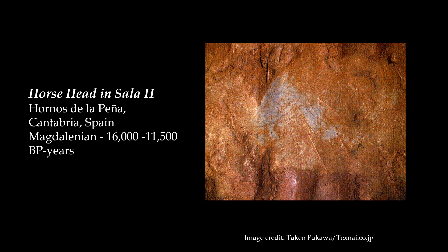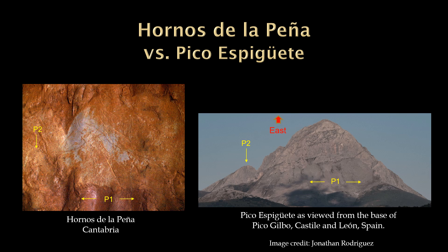Back on the Iberian Peninsula, we find the head of a bodiless horse facing in the opposite direction on another wall in Ornos de la Peña. This is not the missing head of our previously pictured pregnant mares. This Ornos de la Peña horse head and neck is a close match with Pico Espagueti as viewed from the base of Pico Gilbo in Castile and León, Spain. In addition to the pareidolia horse head and neck shape on Pico Espagueti, the cave artist also captured the forefeature at P1 and the rear peak at P2. The similar natural feature at P1 on the cave wall is what probably drew the attention of the artist to choose this geological canvas.